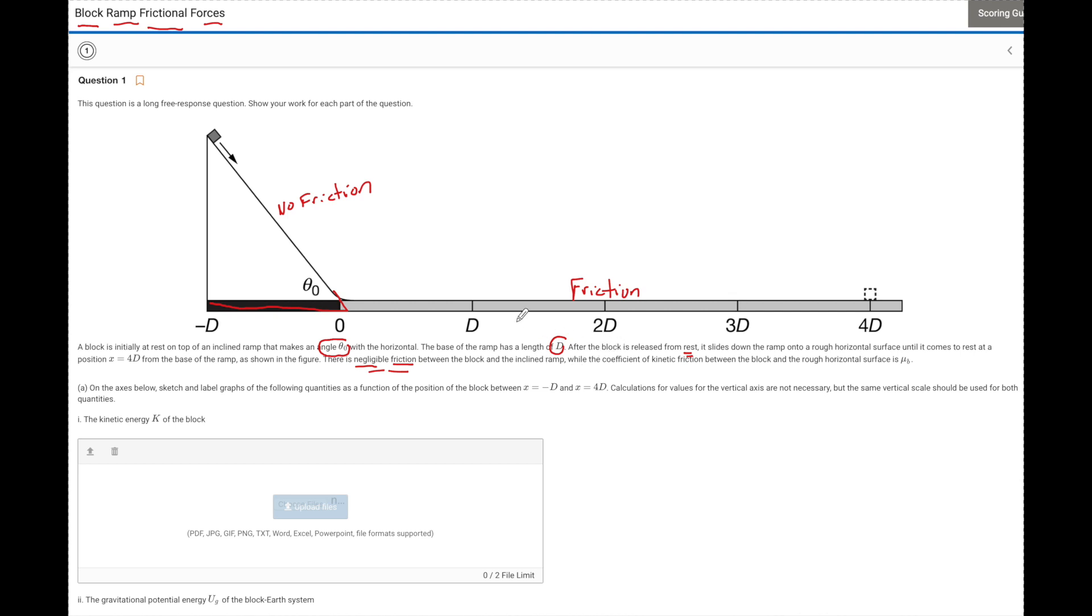In this course, negligible we can just assume to be zero. They also give you a variable for the kinetic coefficient of friction that we're going to use as mu sub B.